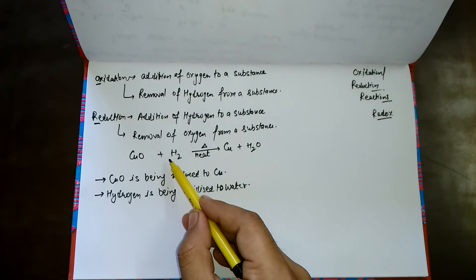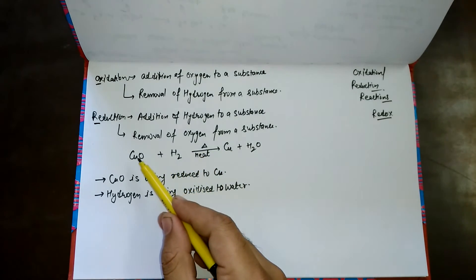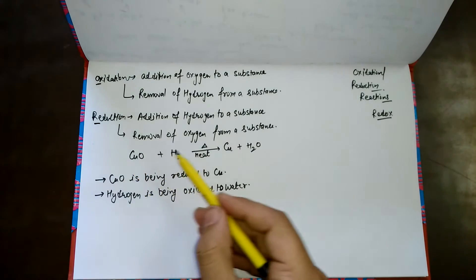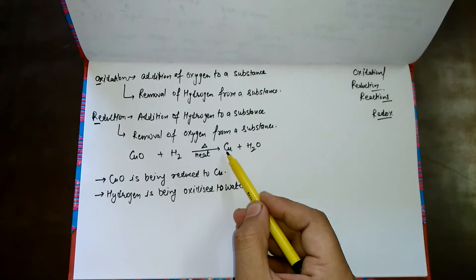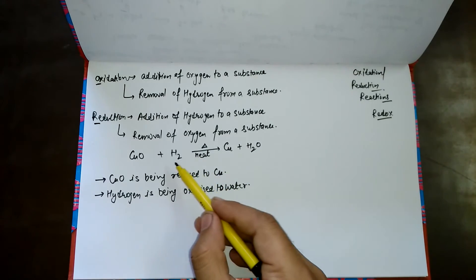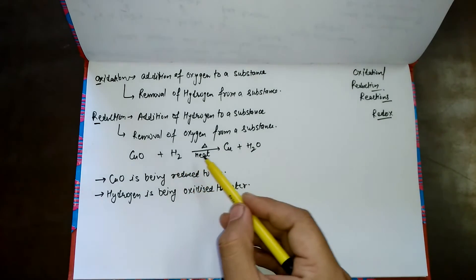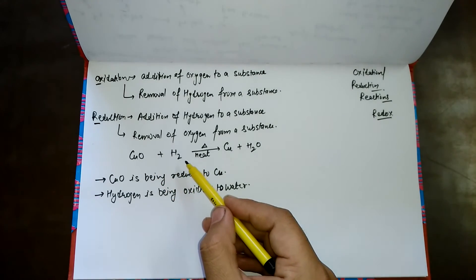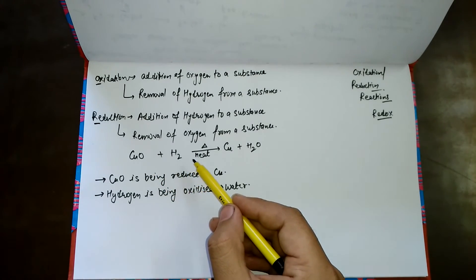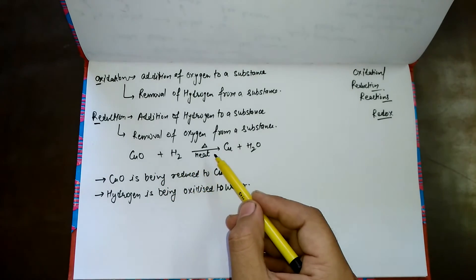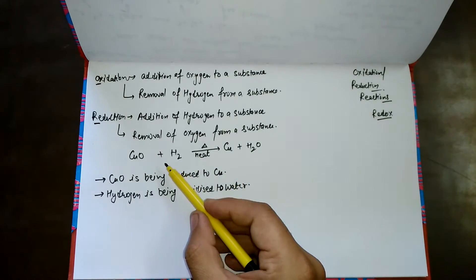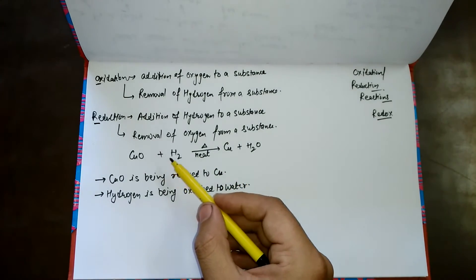At the same time, copper oxide is reduced to copper. This shows that oxidation and reduction take place together. Remember: oxidation and reduction always occur simultaneously.